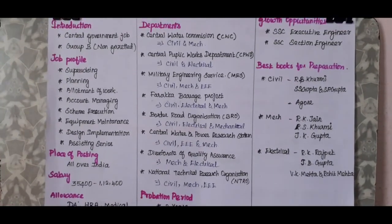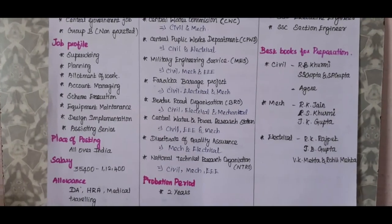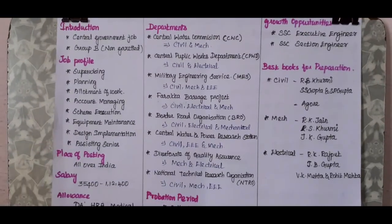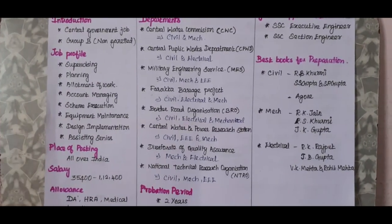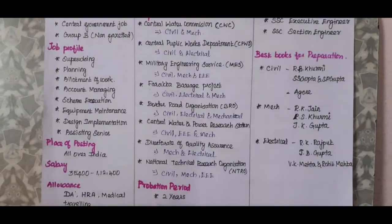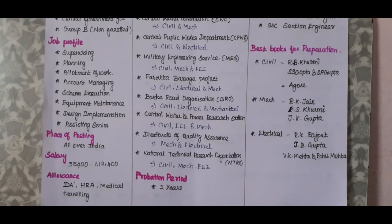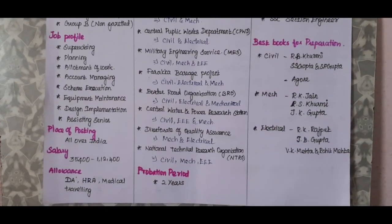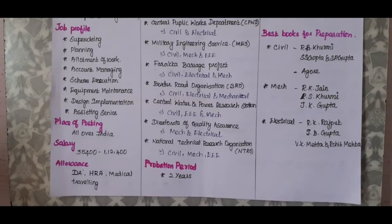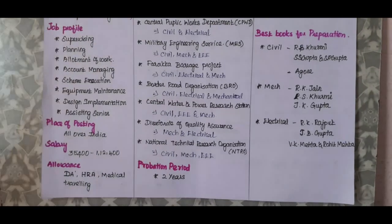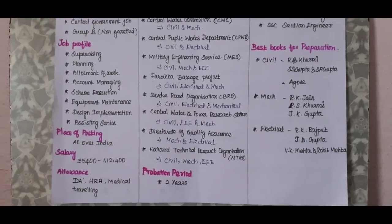Job profile: we will see what work is done on site. The main work includes planning — once we get to the site, we proceed to the next step. Next is account management, scheme execution, and equipment maintenance — there is a lot of equipment on site, so maintenance is important. Then we have design implementation. Next is place of posting.